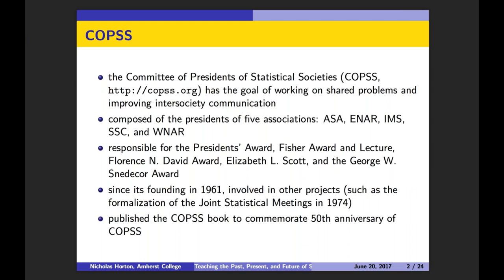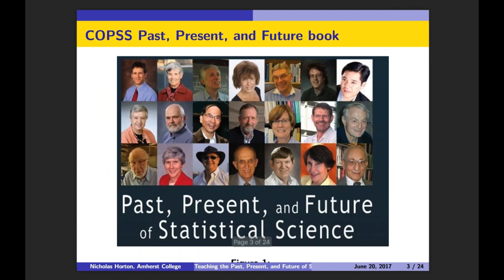In addition to their work on the five awards given out at the JSM, COPS has also been involved in other projects over the years, including publication of what I call the COPS book, commemorating the 50th anniversary of COPS. The COPS past, present, and future book was published in 2014, and it contains 52 short chapters contributed by past winners of one of the COPS awards. The goal was to showcase the breadth and vibrancy of statistics, describe current challenges and new opportunities, highlight the exciting future of statistical science, and provide guidance for future generations of statisticians. The book is available as a freely downloadable PDF from the COPS.org website.